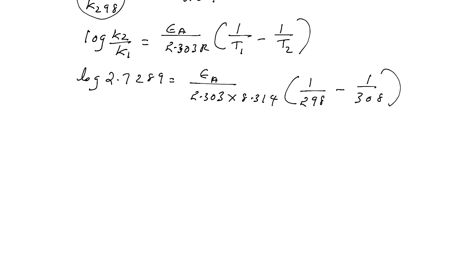Now log 2.7289 value is 0.4360, Ea by 2.303 × 8.314 × 308 minus 298. On subtracting you will be getting 10, then 298 × 308. So the only unknown is Ea. See, further simplifying you please do by yourself because only unknown is Ea and on calculating you will be getting 76,623 Joule per mole. And if you want answer in kilojoule, divide this with 1000. So 76.623 kilojoule per mole.